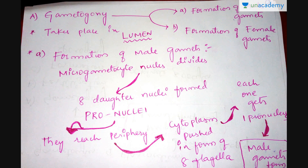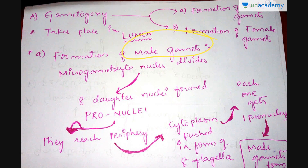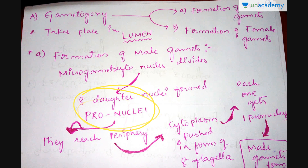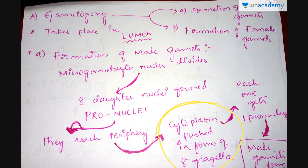In gametogony, the formation of male and female gametes can be seen. This formation occurs in the lumen of the mosquito. The initial gametocytes are called micro-gametocytes. Their nucleus first divides into eight daughter nuclei. Each nucleus is called a pronuclei. After dividing, the pronuclei reach the periphery of the cell.